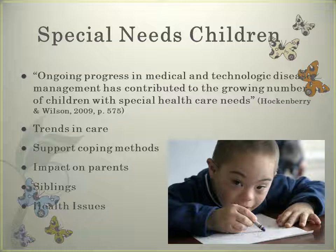Normalization allows the child to participate in as many normal social activities as possible, just as a person without a disability would. Modifications may have to be made, but it is in the best interest of the child. You also need to support coping methods, serving as a role model for appropriate interactions with the child. Ensure that parents and siblings perceive the child as a child first with unique needs. Encourage communication among the family members.